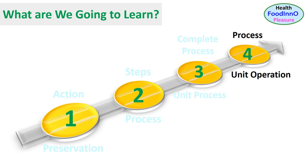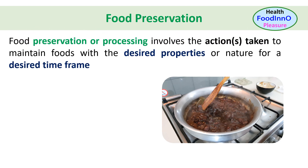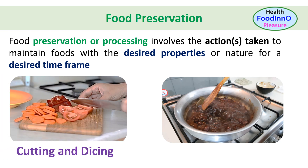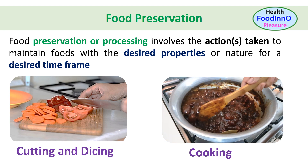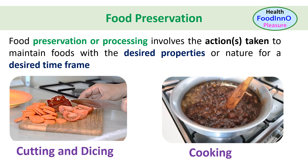Food preservation or processing involves the actions taken to maintain foods with desired properties or nature for a desired time frame. We need to understand three aspects: actions, desired properties or characteristics, and desired time frame. For example, cutting and dicing — the action is size reduction and the purpose is easy consumption, that is biting and chewing.